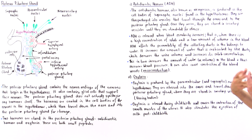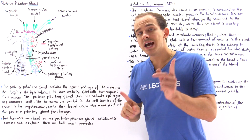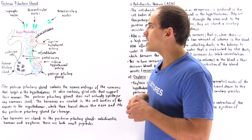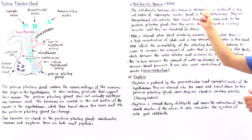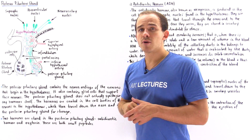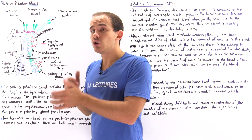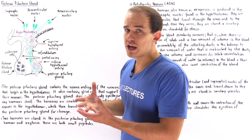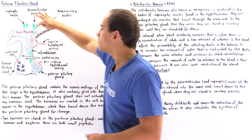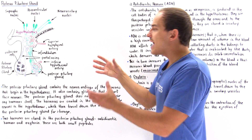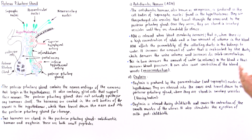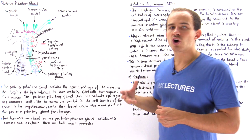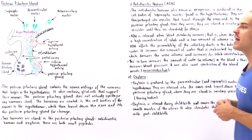Let's discuss how ADH is produced, its function, and when it is released. The antidiuretic hormone, also known as vasopressin, is produced in the rough endoplasmic reticulum of the cell bodies of the supra-optic nuclei. Once produced, the hormones are packaged into secretory vesicles, travel through the axon to the posterior pituitary gland, and are stored in special secretory vesicles known as herring bodies until a certain stimulation triggers their release.